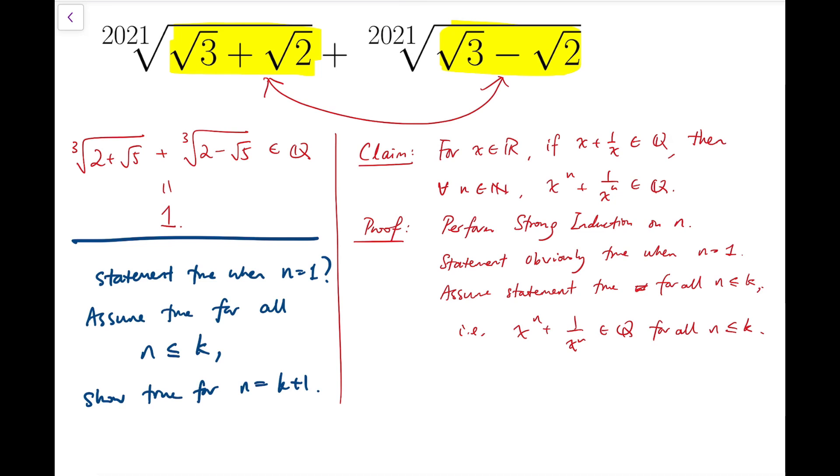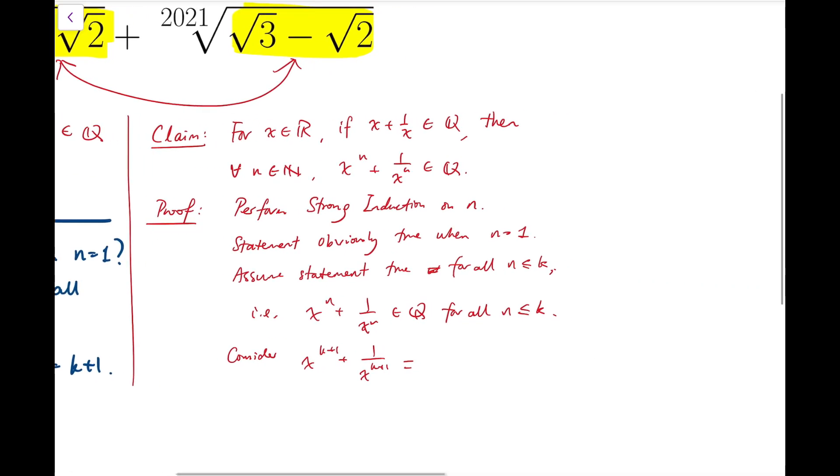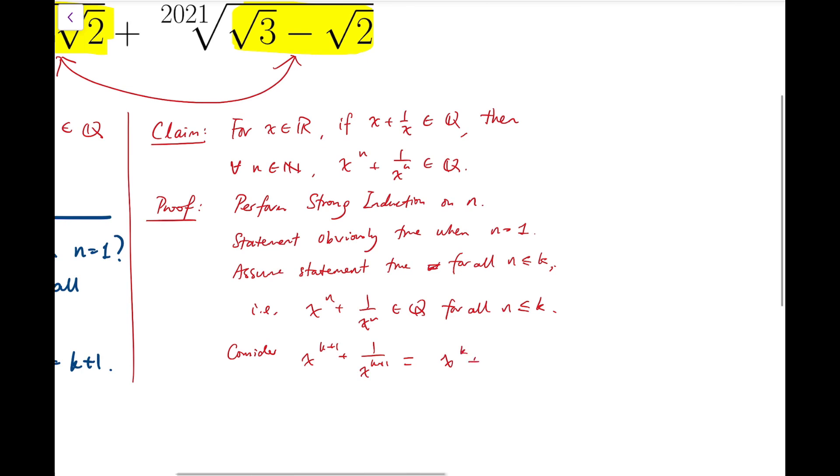Now for the k plus 1 case, I'm going to rewrite it as the product of x to the k plus 1 over x to the k, times x plus 1 over x.